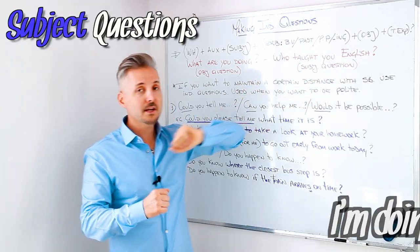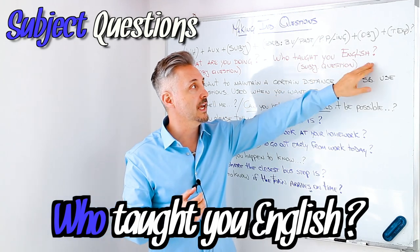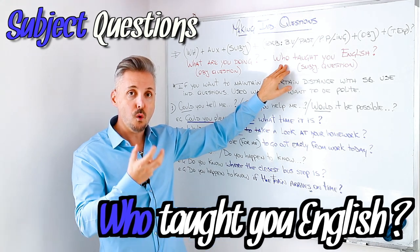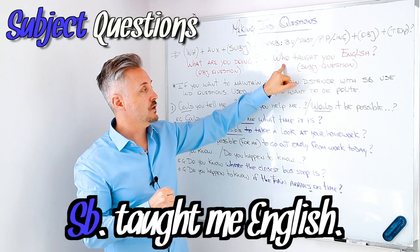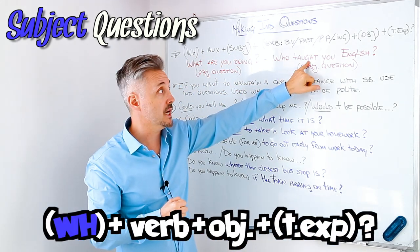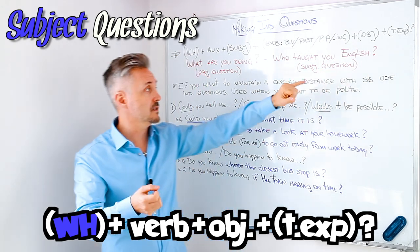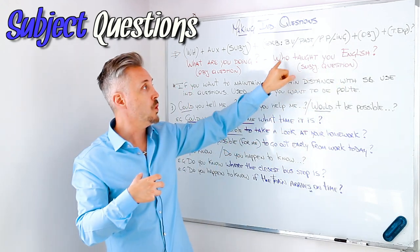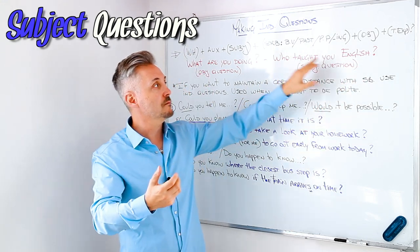In the other example, I ask for the subject. 'Who taught you English?' Here we need the subject — we want to know who. Somebody taught me English. You can see that we have the WH question word and then the verb in the past, then the object. So this is a subject question: 'Who taught you English?' For example, Mark taught me English.